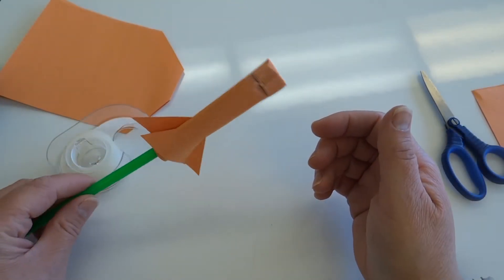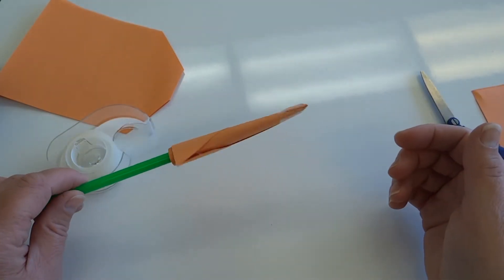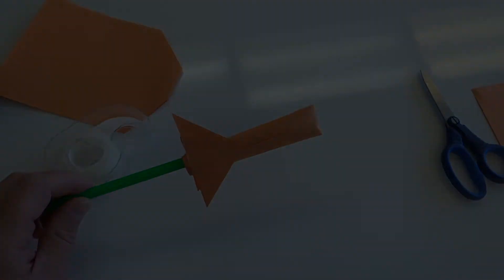Now that you have a straw rocket, create a science experiment following the steps of the scientific method. Use the worksheet and the link below to follow along.